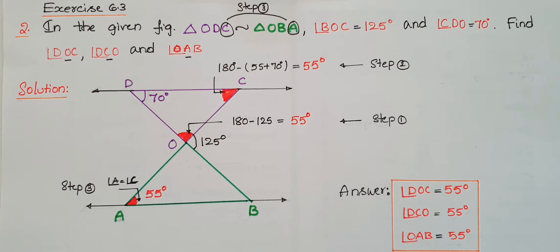Hello everyone, today I am going to tell an easy way to do the second problem from Exercise 6.3 from the triangles chapter from NCERT Class 10. In the given figure, triangle ODC is similar to triangle OBA.